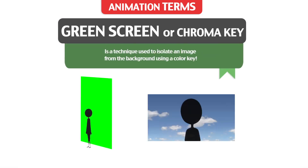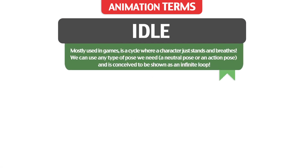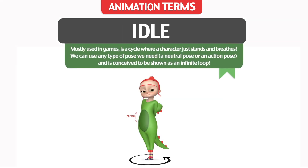Green Screen or Chroma Key: a technique used to isolate an image from the background using a color key. Idle: mostly used in games, it is a cycle where a character just stands and breathes. We can use any type of pose we need — a natural pose or an action pose — and it is conceived to be shown as an infinite loop.